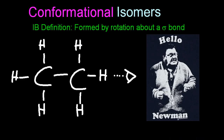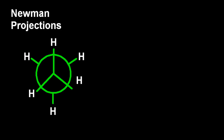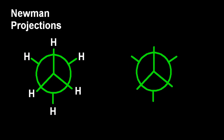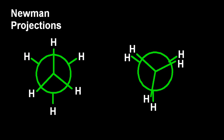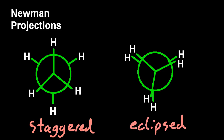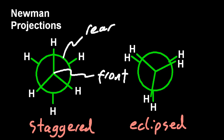This is what's called a Newman projection. The diagram on the left is one extreme — the staggered arrangement — and the diagram on the right is the other extreme — the eclipsed arrangement. It looks like the hydrogens themselves are far apart or close together, but it's actually the electron pairs bonding the hydrogens to carbon that matter, not the hydrogen atoms themselves. The big circle represents the rear carbon, and the central connection represents the front carbon of the ethane molecule.